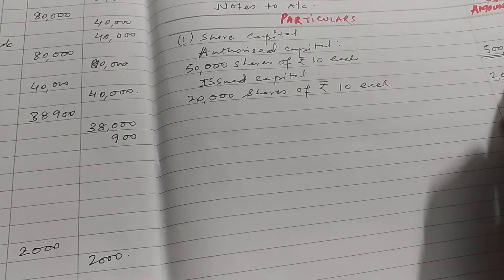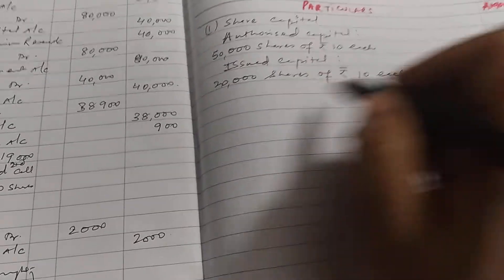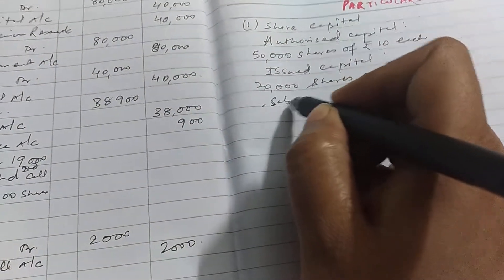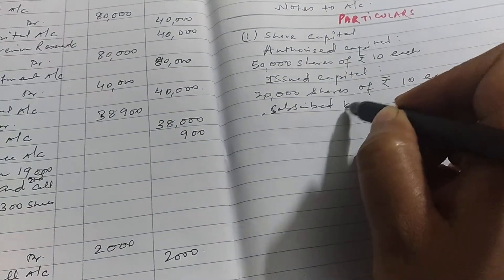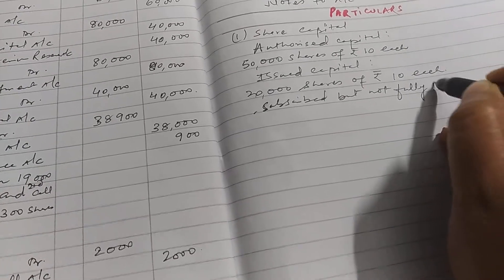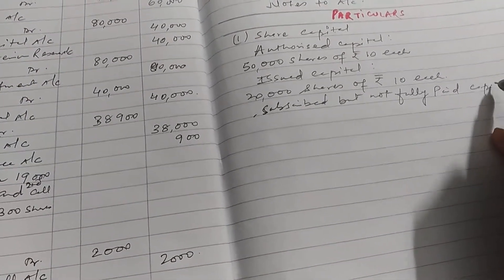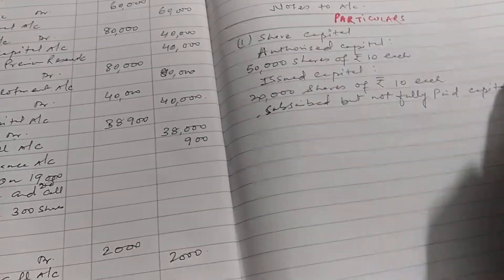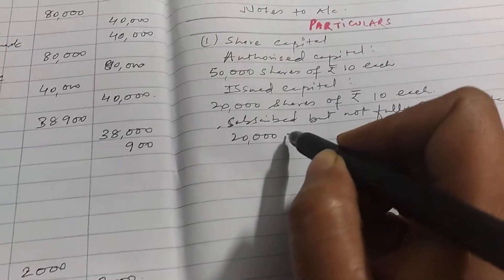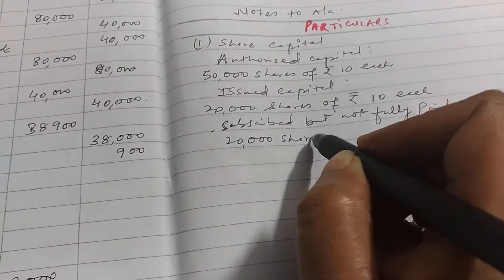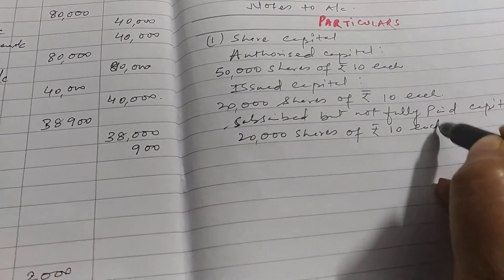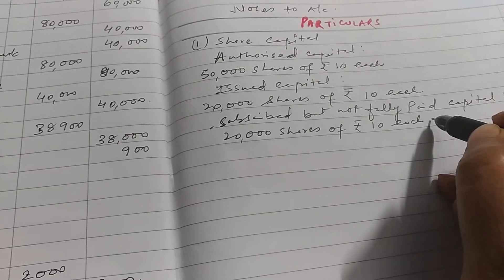Then next heading is subscribed but not fully paid capital. Under this we have to write 20,000 shares of rupees 10 each and rupees 7 called up.